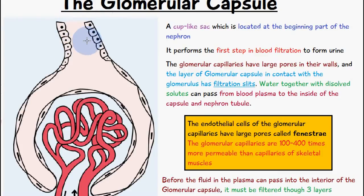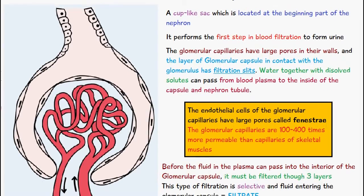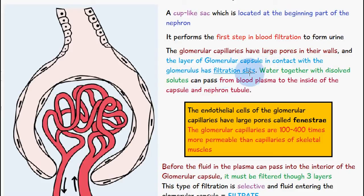This region is the beginning part of the proximal convoluted tubule of the nephron. The glomerular capsule is a cup-like sac located at the beginning part of the nephron and it performs the first step in blood filtration to form urine. The glomerular capillaries have large pores in their walls, and the layer of the glomerular capsule in contact with the glomerulus has filtration slits. Water together with dissolved solutes can pass from the blood plasma to the inside of the capsule and the nephron tubule.